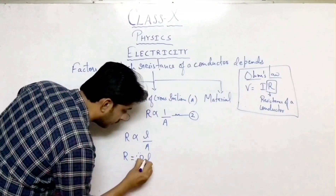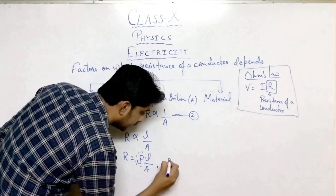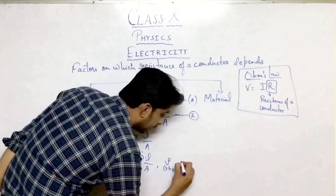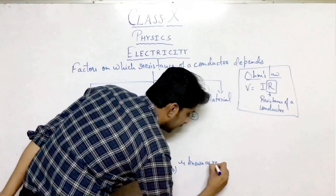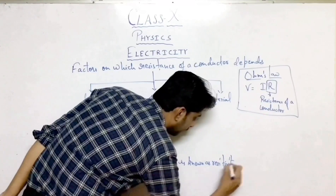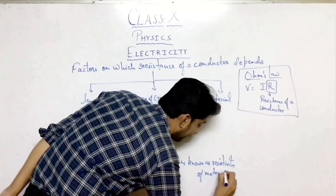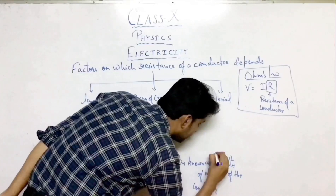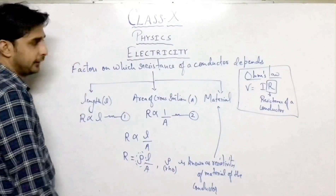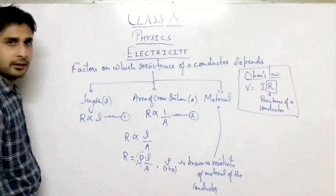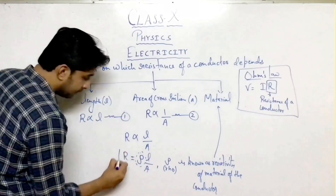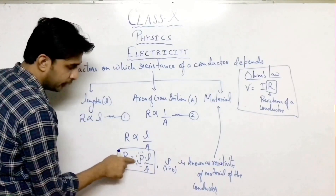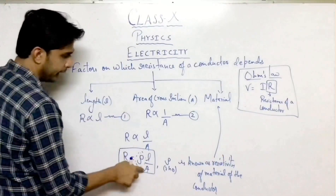This ρ (Rho) is a constant. This symbol is known as Rho, and Rho is known as the resistivity of the material of the conductor. So this resistivity is actually the third factor, which depends on the material of the conductor. This formula is for resistance: R = ρL/A, where Rho is resistivity, L is length, and A is area of cross section.